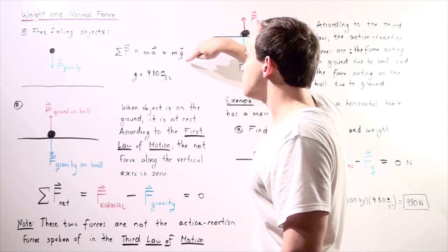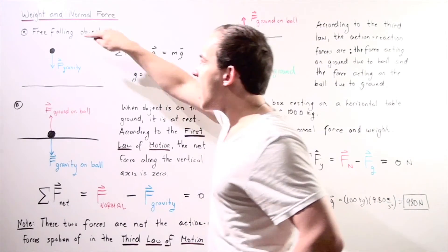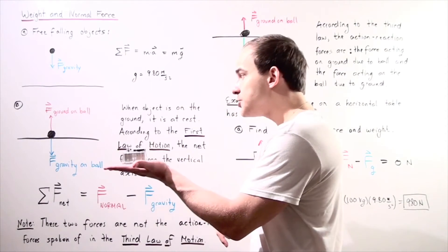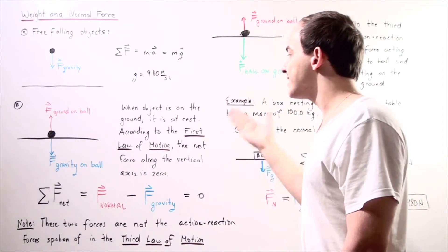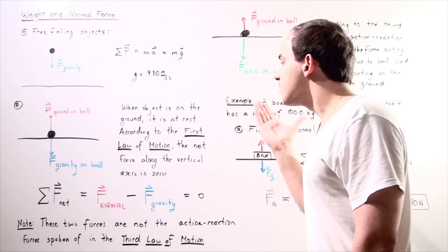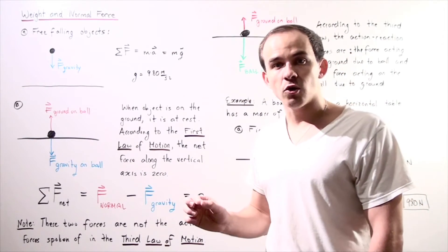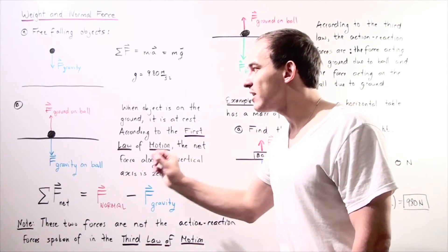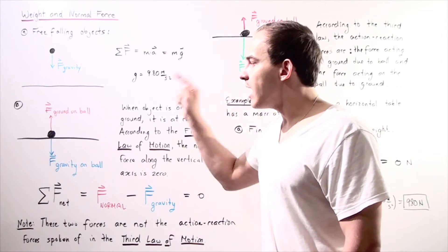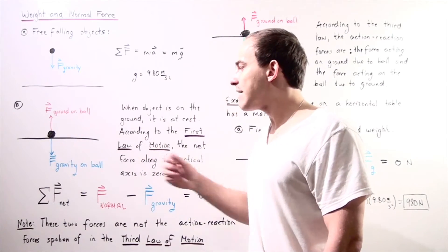This force, equal to m times g, is known as the weight of the object. When the object reaches the surface of the earth — the ground — it becomes stationary and is at rest. According to the first law of motion, the net force along the y-axis is zero; the object is no longer accelerating. This means a second force must be acting on the object, pointing in the opposite direction of gravity — opposite to the weight.